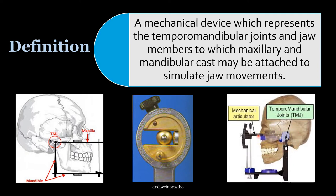It is a mechanical articulator and this is the temporomandibular joint. This is the condylar element which represents the mandibular condyle. This is the condylar shaft or the condylar guidance. It represents the mandibular fossa of the temporomandibular joint.